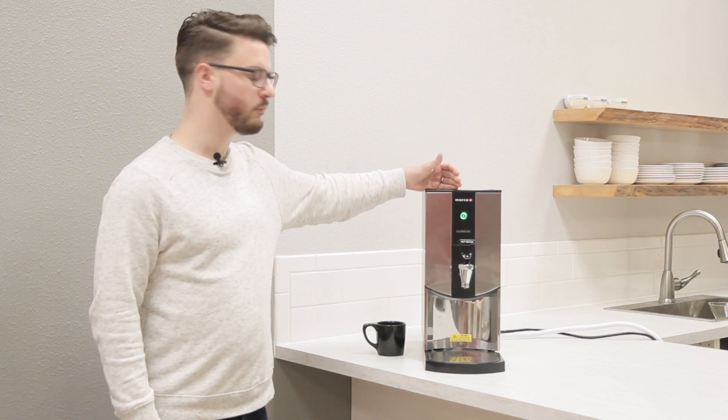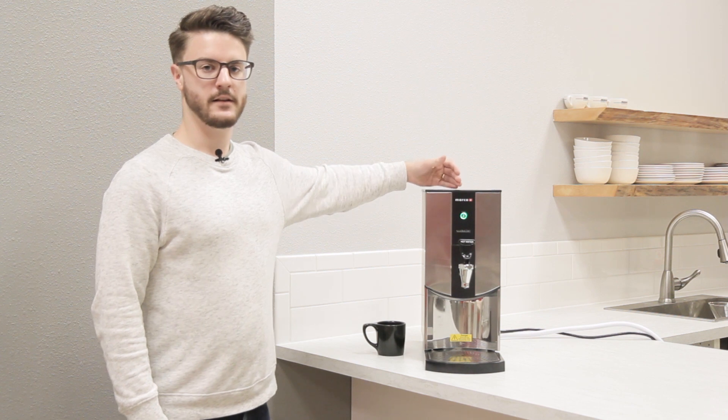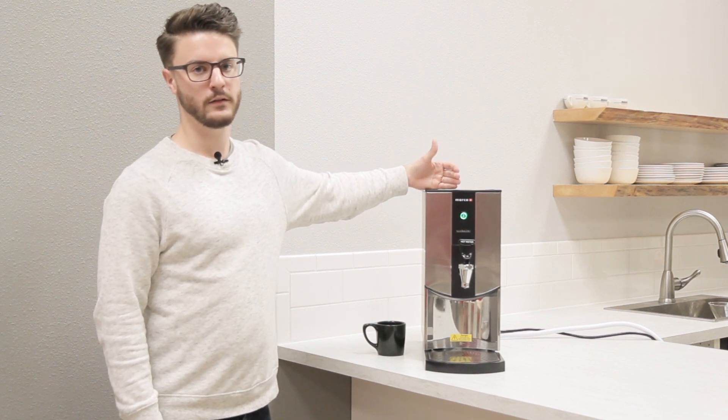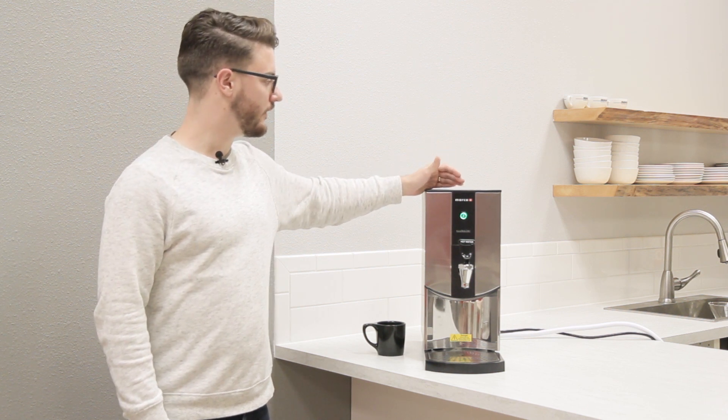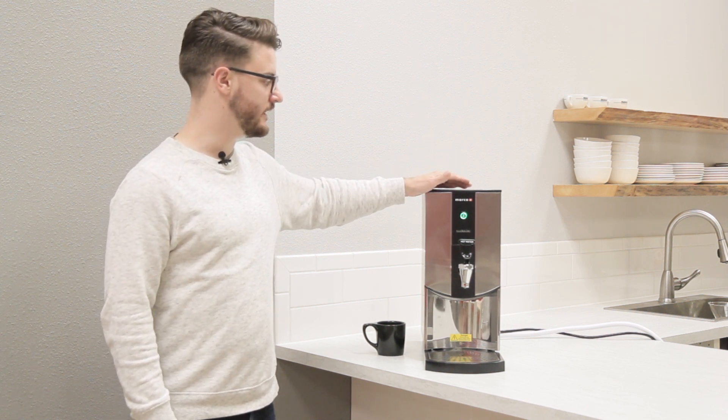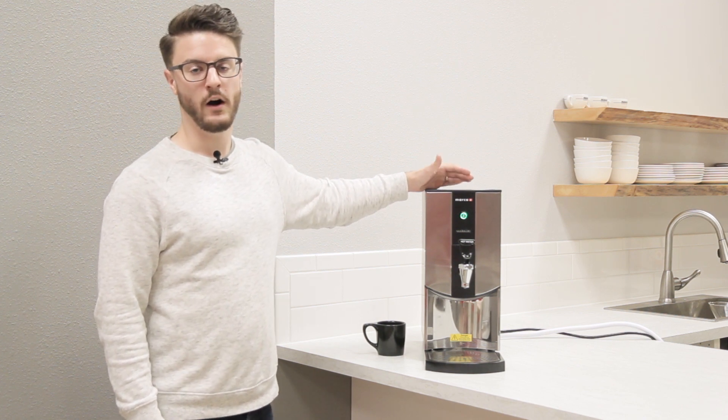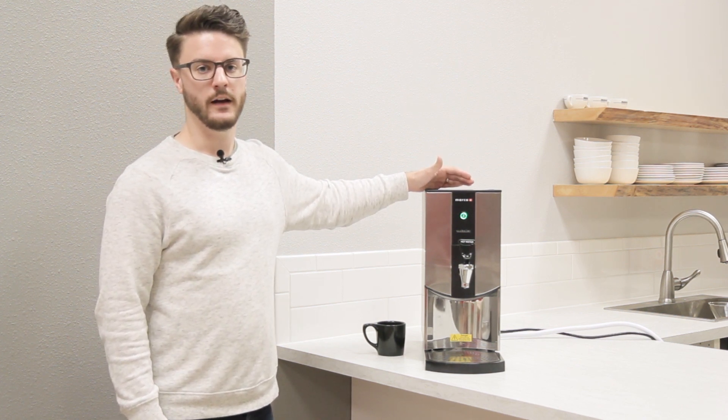So this is from their Eco Boiler line. As I was saying, it's the T5 Boiler. It's confusing because it is a three liter boiler. They're really proud of this one because it is pretty much the most energy efficient hot water boiler for the market.